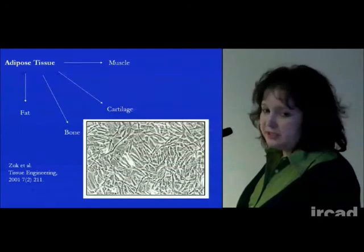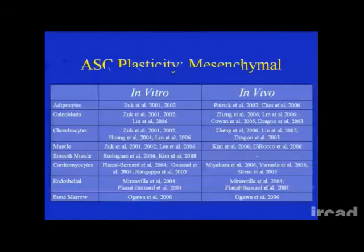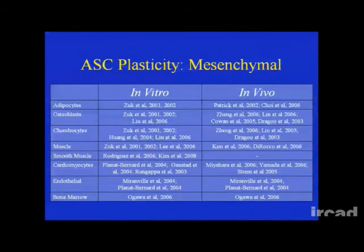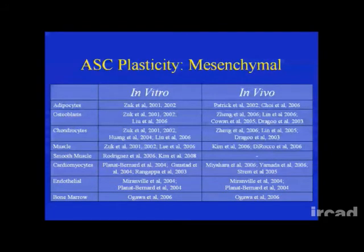You can see the image of the cells — they're very fibroblast-like and very similar to bone marrow stem cells. The plasticity of these cells: fat is derived from the mesoderm, so these are mesenchymal stem cells. Differentiating them into tissues derived from the mesoderm is non-controversial and now well-established. This table shows both in vitro and in vivo animal studies differentiating adipose-derived stem cells into fat, bone, cartilage, muscle, cardiomyocytes, and bone marrow, for example.